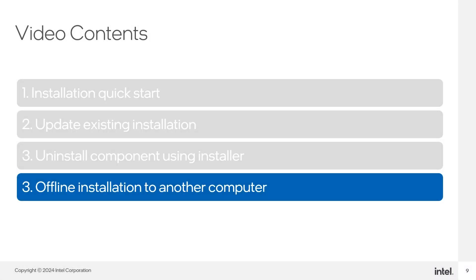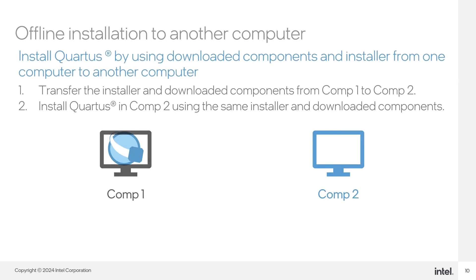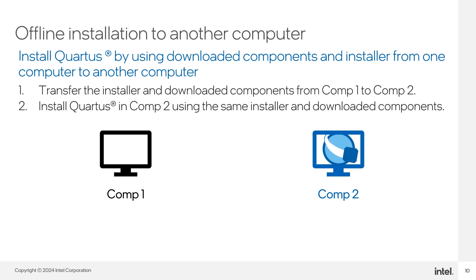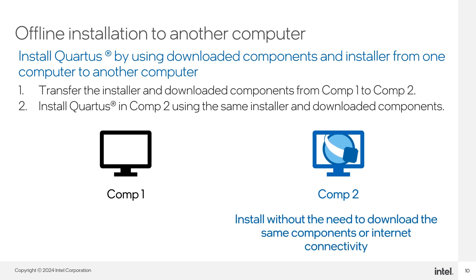Using the installer, as long as you did not delete the downloaded components, you can install the same Quartus version to another computer without the need to connect to the internet on the second computer. If you have downloaded components from one computer, you can use those components and the installer to install Quartus on another computer. You are required to transfer the installer and the downloaded files to the other computer, and you will be able to install without an internet connection.